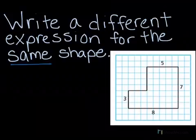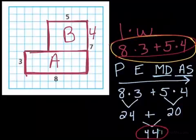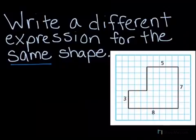Okay, now I have to write a different expression for the same shape. So this shape should have the same area as the one we just solved, which we got 44. But we can't use the same expression. We have to come up with a new one.